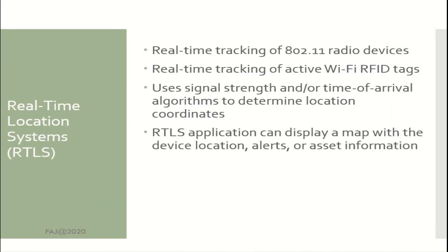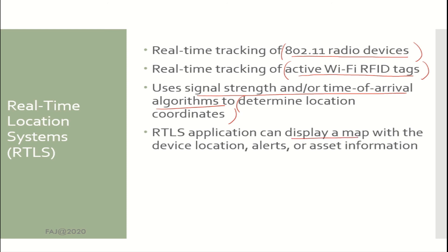Real-Time Location Systems (RTLS) provide real-time tracking of 802.11 radio devices and active Wi-Fi RFID tags. They use signal strength and/or time-of-arrival algorithms to determine location coordinates. RTLS applications can display a map with device location, alerts, or asset information.